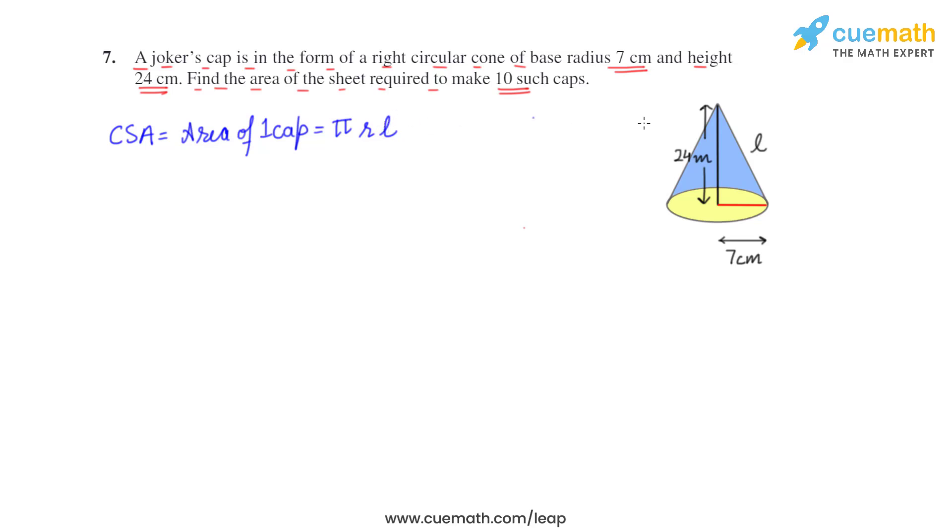So it means we need l. You can see a right triangle is there, so we will apply the Pythagorean theorem. l² will be equal to r² + h².